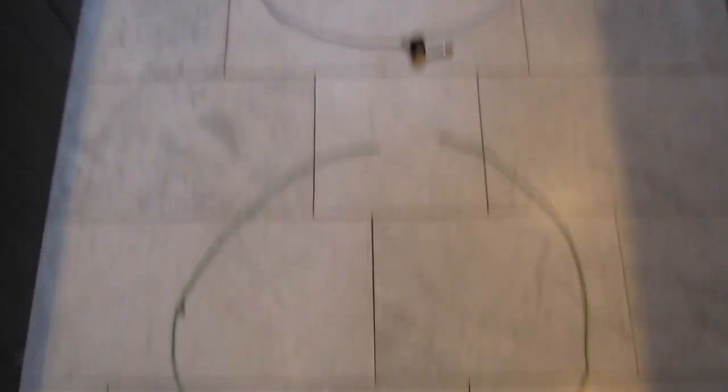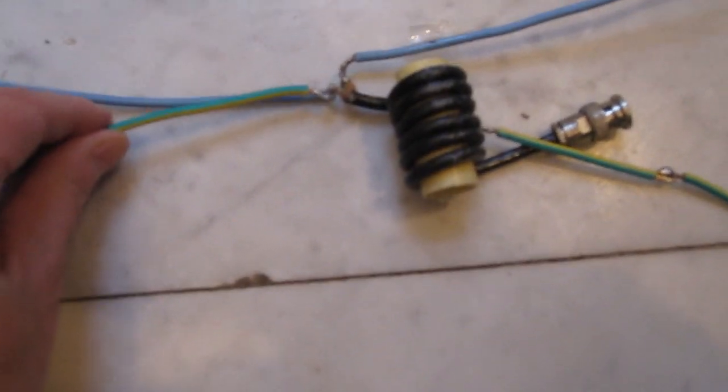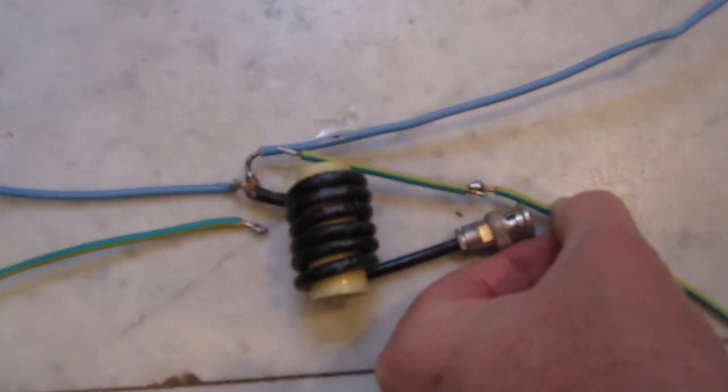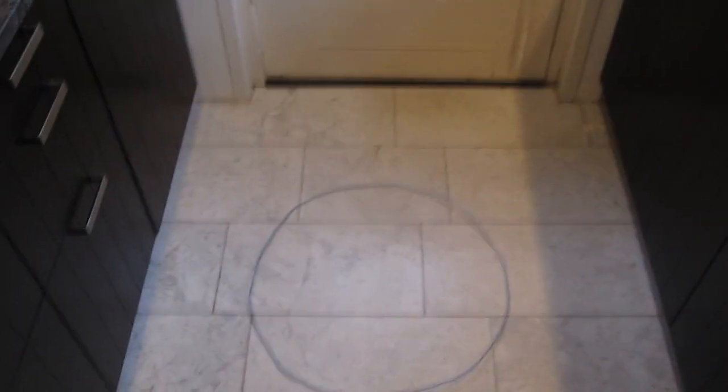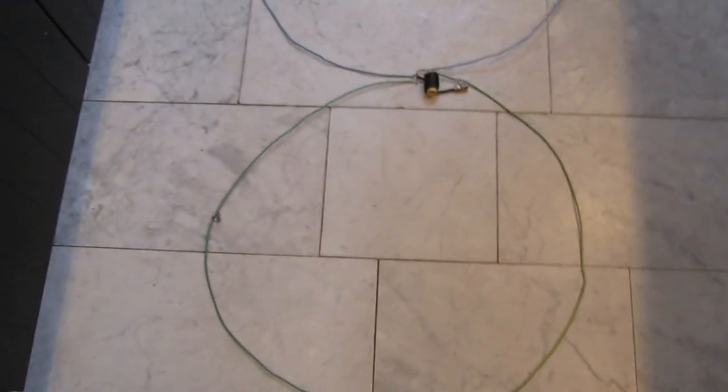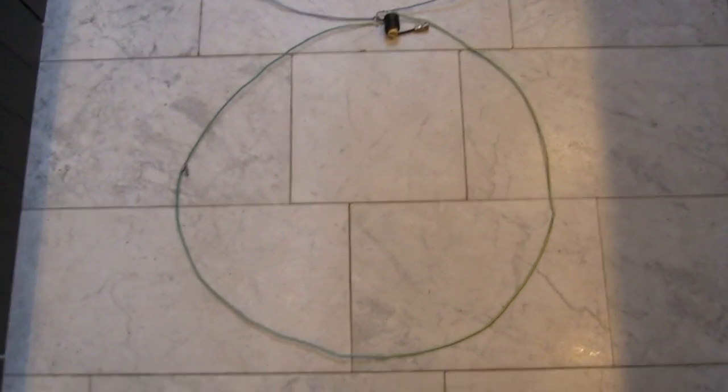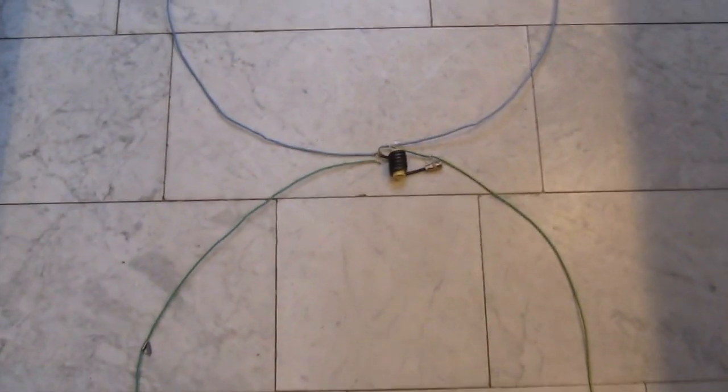But if you have another loop, the same dimension, then you can easily add it, connect it together - this one to this point and this one to that point - and then it becomes a double quad, or bi-quad. Impedance will be in the order of 50 ohms.